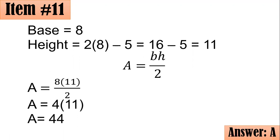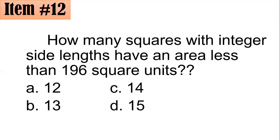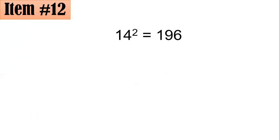Number 12. How many squares with integer side lengths have areas less than 196 square units? Is it 12, 13, 14, or 15? For this one, we have to recall the fact that since we are limiting the side lengths to integers, we know that 14 squared is 196.